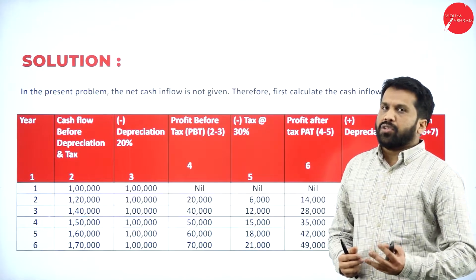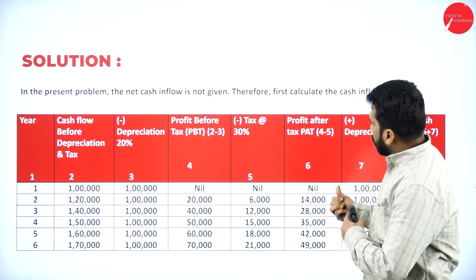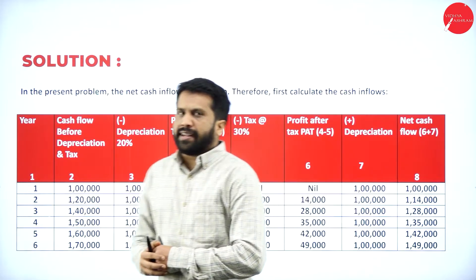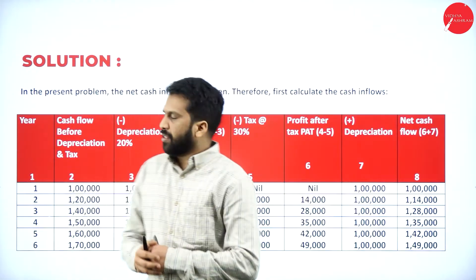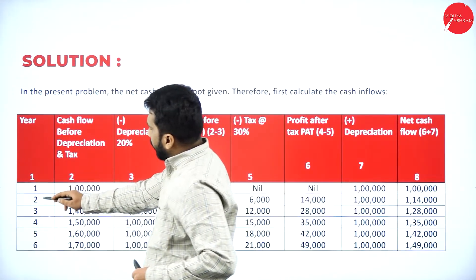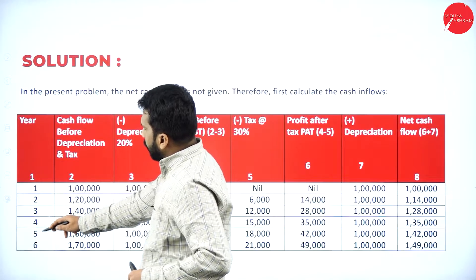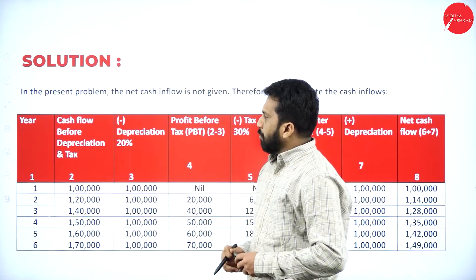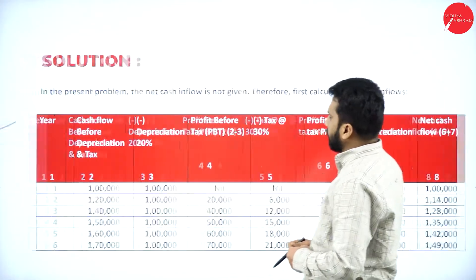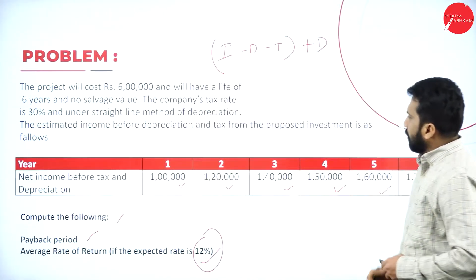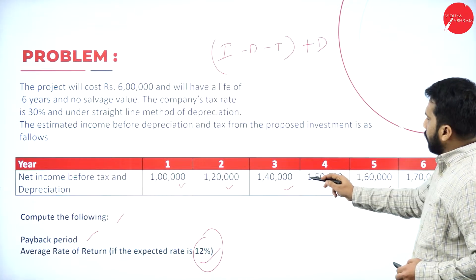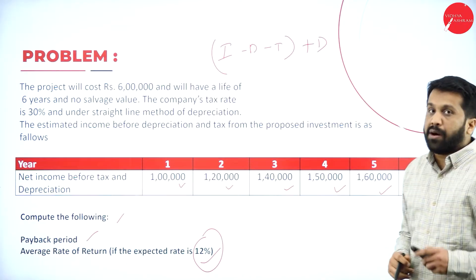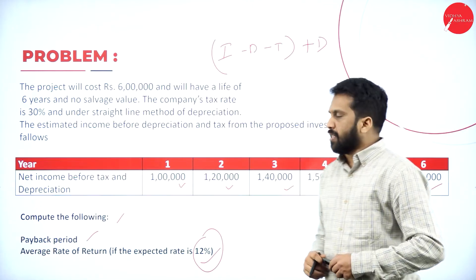We have to calculate the total net cash flow. We have years 1 through 6, and the cash inflow before depreciation is already given: 1 lakh, 1 lakh 20,000, 1 lakh 40,000, 1 lakh 50,000, 1 lakh 60,000, and 1 lakh 70,000.